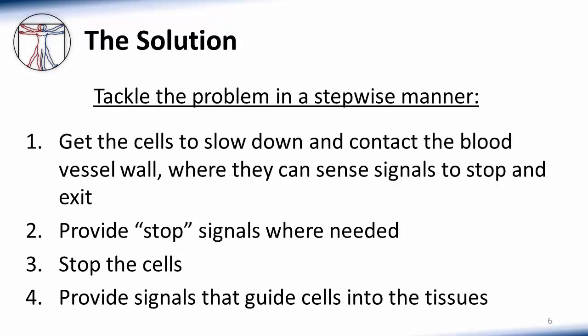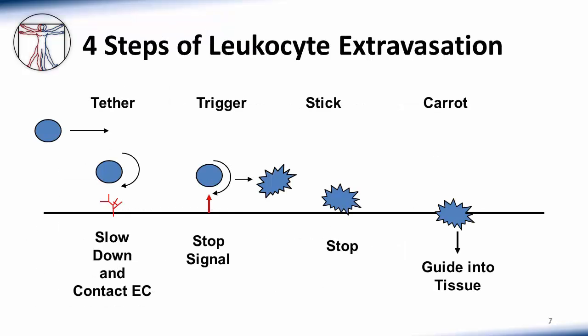Second, provide stop signals where they are needed. Third, stop the cells. And fourth, provide signals that guide cells into tissues. The result is what is commonly known as the four steps of leukocyte extravasation. These four steps occur in a serial manner and are each controlled by specific molecular mediators.